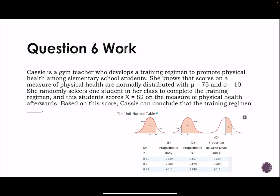Okay. Question number 6. Cassie is a gym teacher who's developed a training regimen to promote physical health among elementary school students. She knows that scores on a measure of physical health are normally distributed with a mean of 75 and a standard deviation of 10. She randomly selects one student and completes the training regimen. The student scores an 82. Based on this score, Cassie can conclude that the training regimen is either successful or not successful. And I do have the answers here in the second part. So what we're going to do on this is we're going to find that z-score. So we're going to have 82 minus 75 divided by 10. So 82 minus 75 is going to give us 7 over 10, which is going to give us a 0.70.